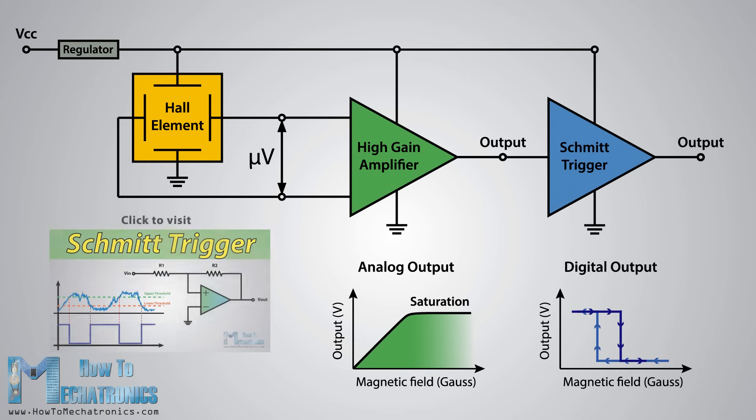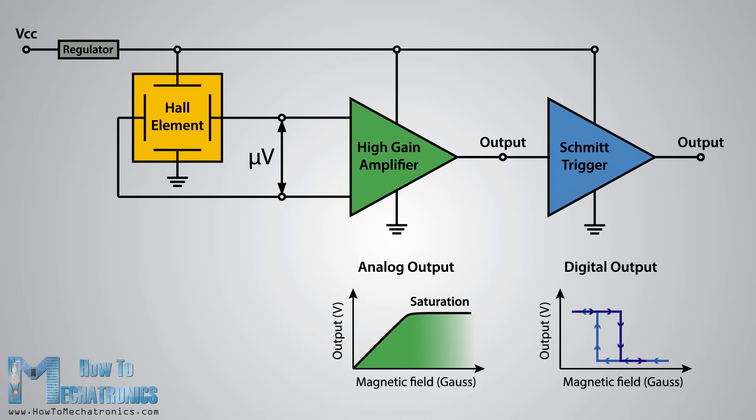For more details how the Schmidt trigger works you can check my particular tutorial for that. An example of this type of sensor is the Hall effect switch. They are often used as limit switches, for example in 3D printers and CNC machines as well as for detection and positioning in industrial automation systems.